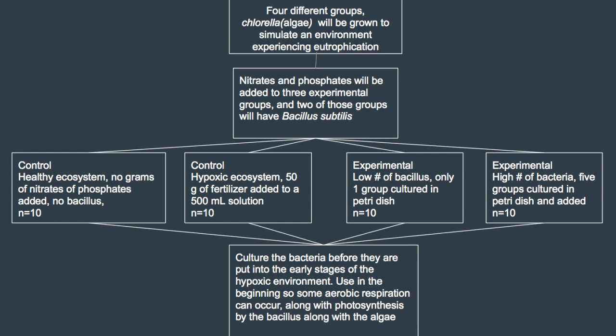There will be four groups in this experiment, two representing the control and two representing the experimental. The two control groups will both be in healthy ecosystems — one will have Miracle-Gro added to the solution and the other will not. The two experimental groups will have varying levels of Bacillus silvillus added to the waters: the first group will have low numbers of bacteria and the second group will have high numbers. Both experimental groups will have the same amount of chlorella added, about the same amount found in most algae bloom situations.